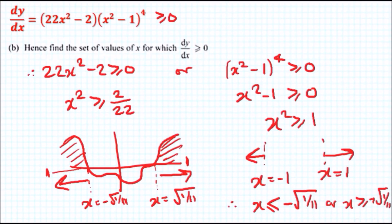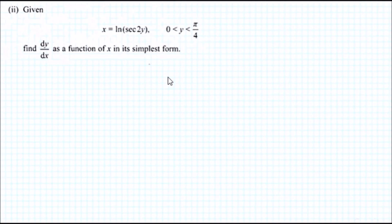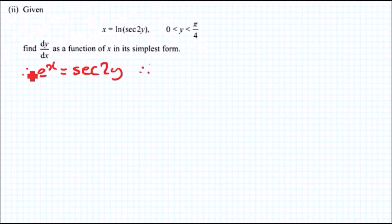Now let's move on to the final part of question 7. This was arguably the hardest question in the paper, because you need to use trig identities and implicit differentiation to work out the derivative of y. Given that x = a·log(sec 2y), find dy/dx in terms of x. The first step is to get rid of the log by taking exponentials on both sides, giving eˣ = sec 2y.